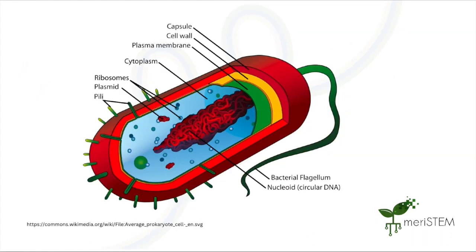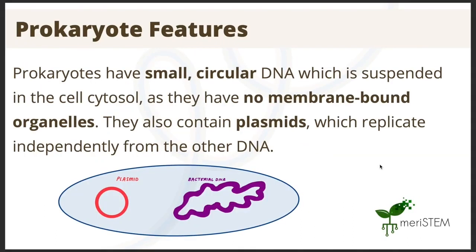Here you can see a more detailed structure of the prokaryotic cell. The DNA in prokaryotes is small and circular and floats within the cell cytosol. The genetic material is not enclosed within a nucleus, because prokaryotes don't actually have any membrane-bound organelles.